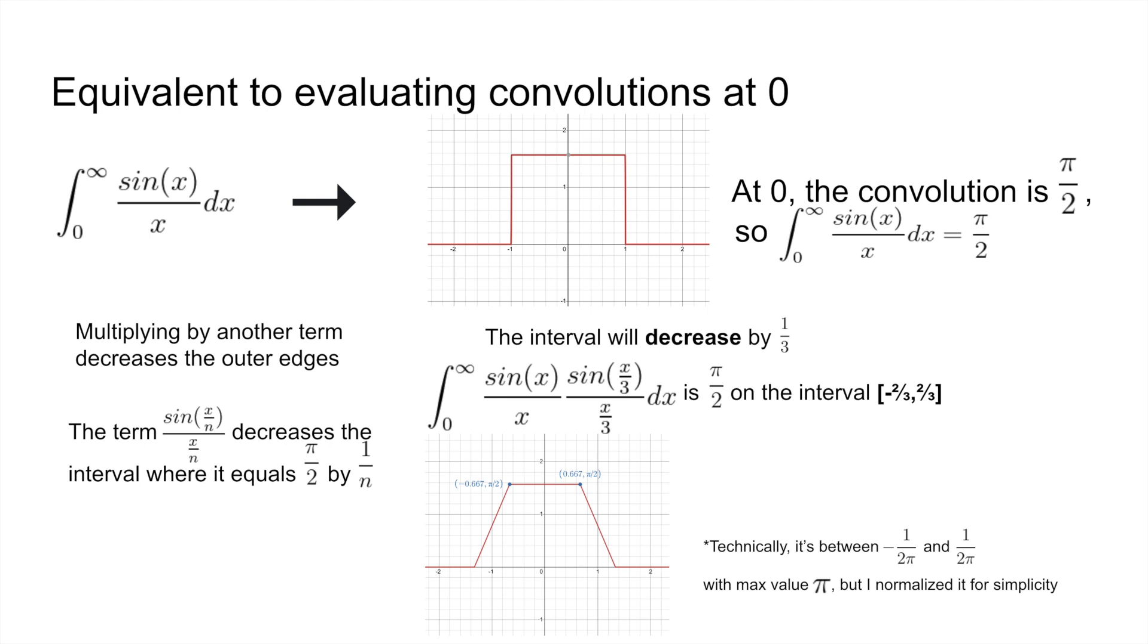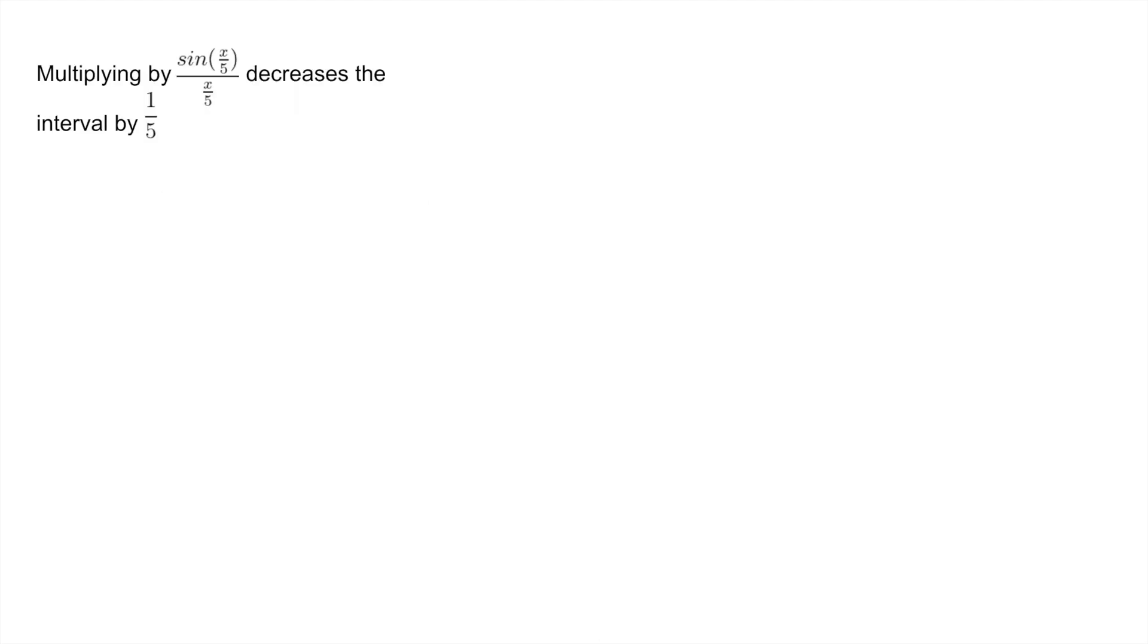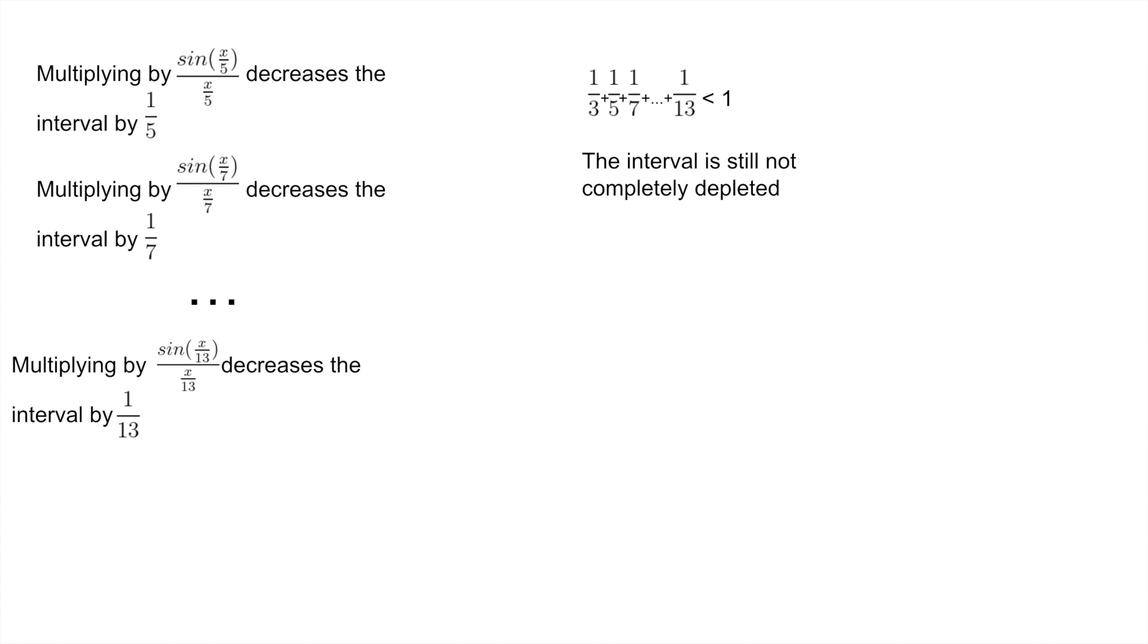Next, when we multiply by sin(x/5)/(x/5), our interval where it is equal to exactly π/2 will decrease by another fifth. And we can continue this pattern all the way up to the term sin(x/13)/(x/13), since 1/3 plus 1/5 all the way up to plus 1/13 is actually slightly less than 1, meaning that our interval where our convolution is equal to π/2 has not been completely eroded away. And so when we evaluate it at 0, we still get precisely π/2.